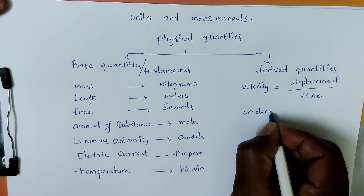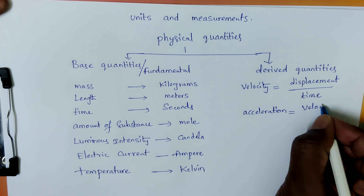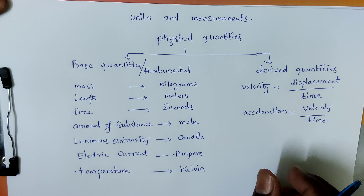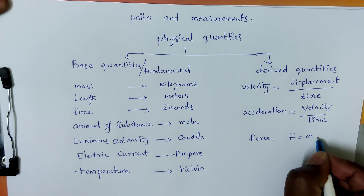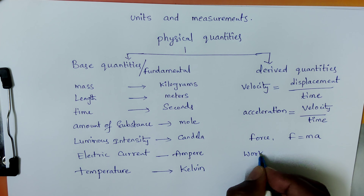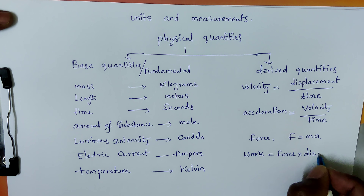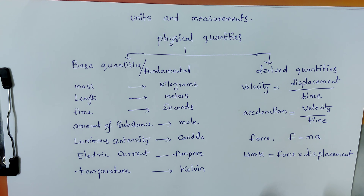Another example is acceleration. Acceleration is also a derived quantity; its definition is velocity divided by time, so it is derived from base quantities. Force is F = mass times acceleration — again a derived quantity. Work done equals force into displacement — this is also a derived quantity.